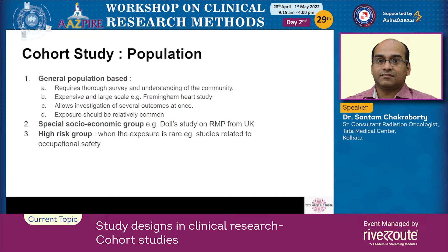Population-based studies allow investigation of several outcomes, and the exposure should be relatively common. You can also derive cohorts from special groups — for example, the Doll study on registered medical practitioners from the UK, which identified the influence of tobacco smoking on future cardiovascular risk. You can identify cohorts using high-risk groups when the exposure is rare — a classical example being studies related to occupational safety, such as the Bhopal gas tragedy cohort.